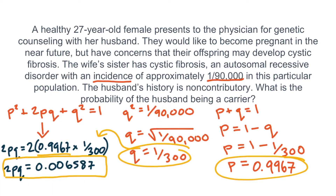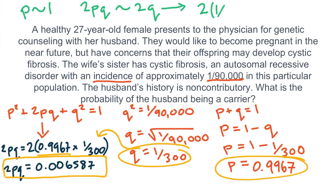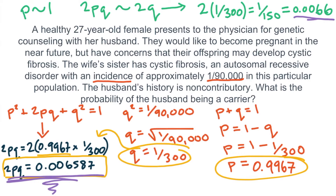With these types of questions, you'll usually be given very large numbers such as 40,000, 90,000, or 160,000. The square root of 1 over 90,000 is 1 over 300, which represents Q. Because P plus Q equals 1 and Q is such a small number — in this case 1 over 300 — we can assume P is very close to 1. This allows us to skip several steps and estimate that 2PQ is approximately the same as 2Q. So 2 times 1 over 300 equals 1 over 150, or 0.0066 — essentially the same result as the longer calculation.